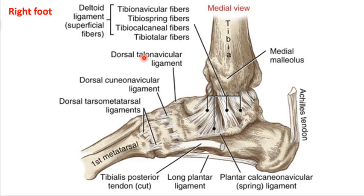There are quite a few ligaments supporting the ankle on both the medial and lateral sides. On the medial side, this is the right foot medial view — the instep — and what you have here is the deltoid ligament, a really dense network of intertwined fibers. It's so strong that if someone rolls their ankle outward, the ligament often stays intact and you actually get a rupture of the bone instead, requiring surgical repair.